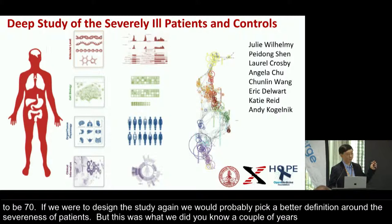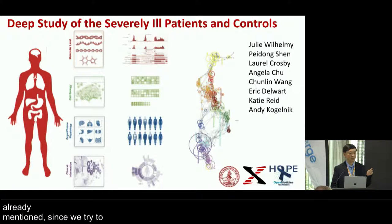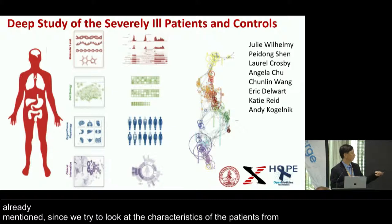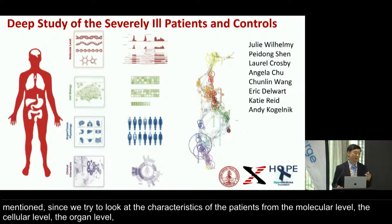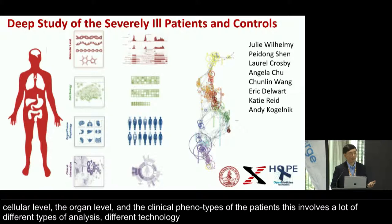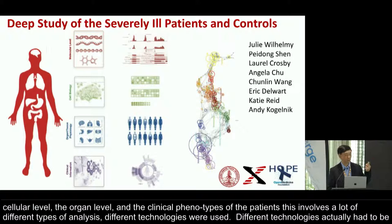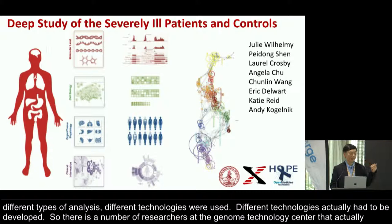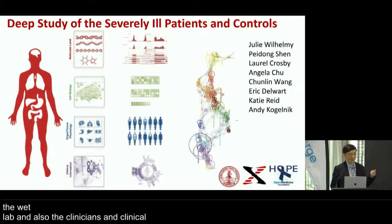Since we tried to look at the characteristics of patients from the molecular level, the cellular level, the organ level, and the clinical phenotypes, this involves a lot of different types of analysis, and different technologies were used and actually had to be developed. There are a number of researchers at the Genome Technology Center who did the wet lab work, as well as clinicians and clinical researchers who recruited patients and did sample processing, and I just want to acknowledge them first.